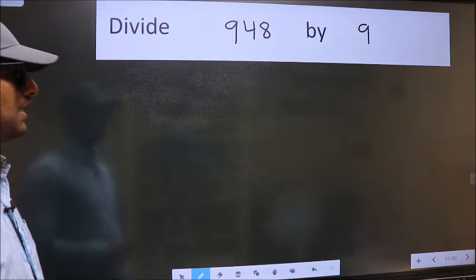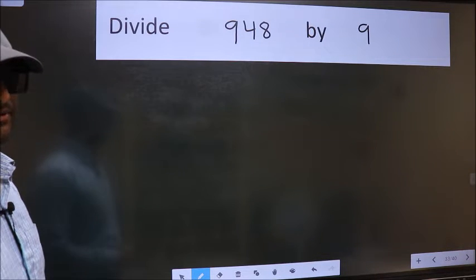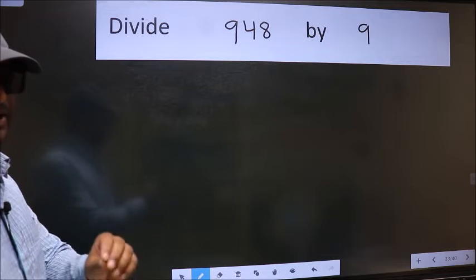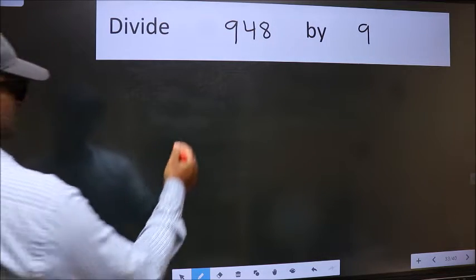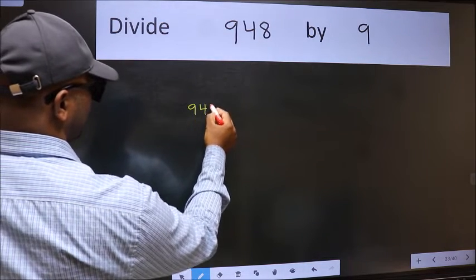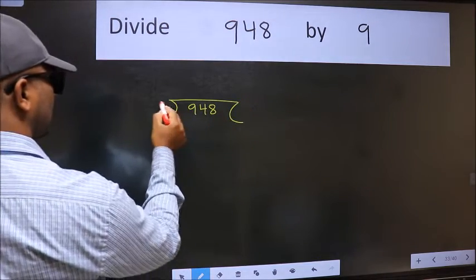Divide 948 by 9. To do this division, we should frame it in this way: 948 here and 9 here.